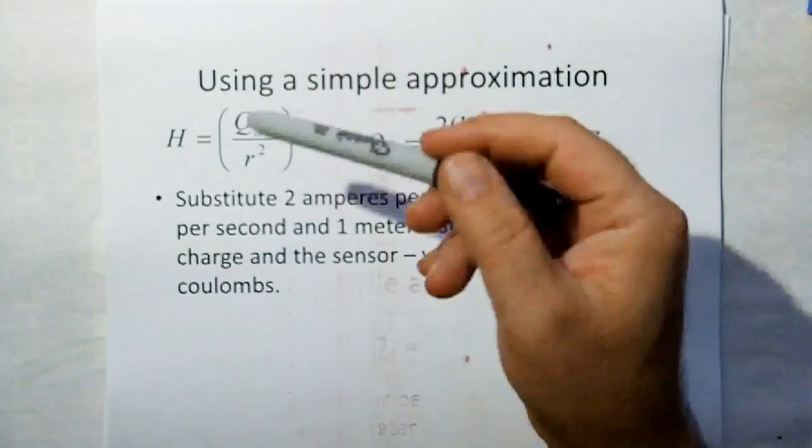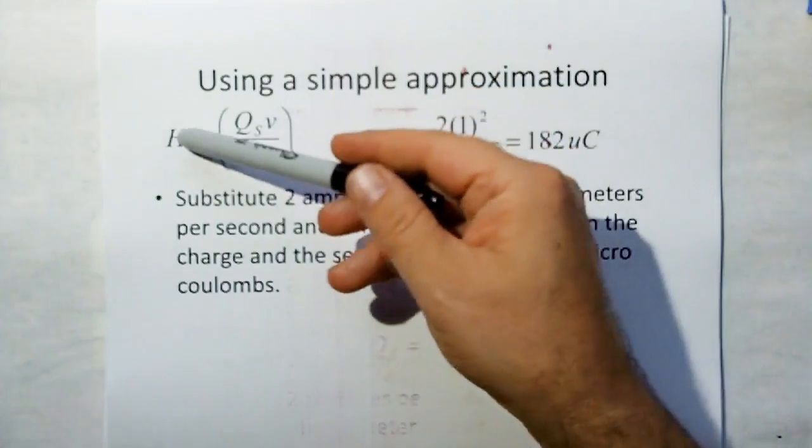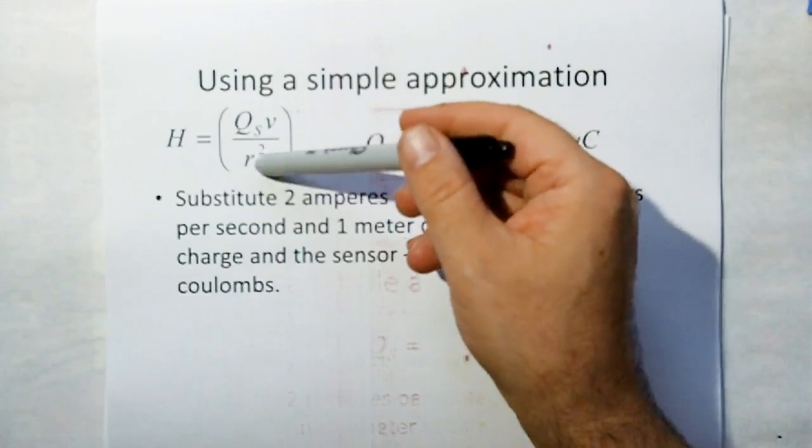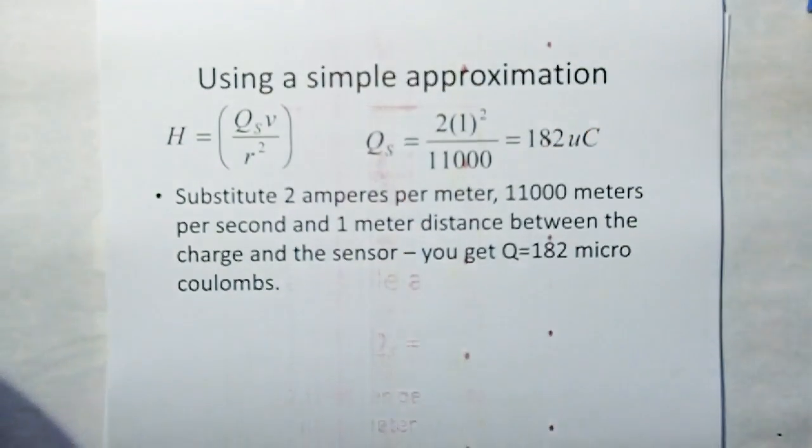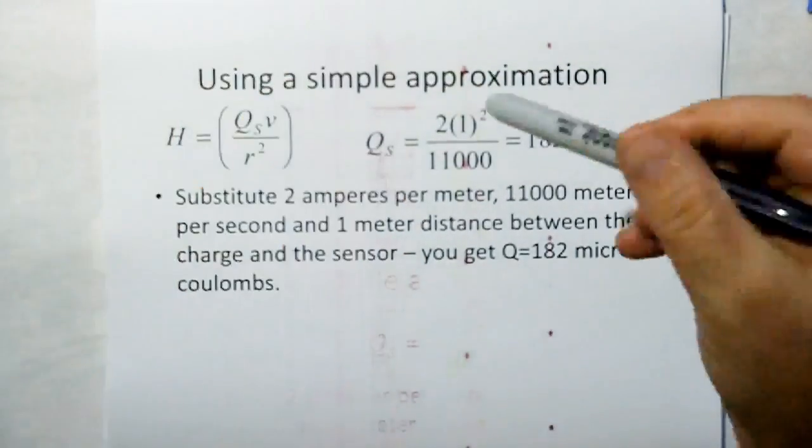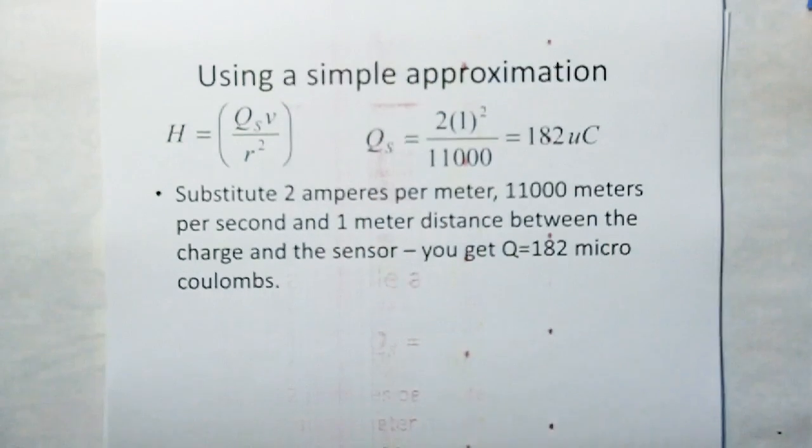And so we already have the velocity. We know what the minimum h we can measure is. And we're going to just pick arbitrarily one meter away. Well, how much charge do we need? And so we work that back out. We come out and say, well, we need 182 microcoulombs, which doesn't seem so bad.